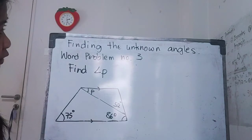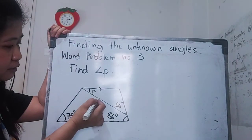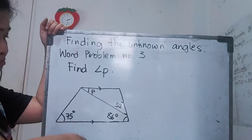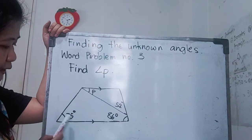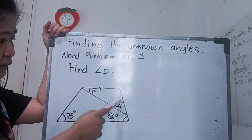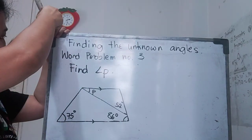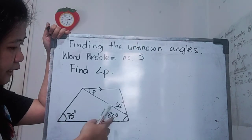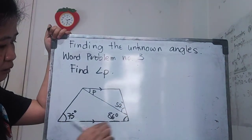For the last word problem, we need to find angle P. Looking at this figure, what kind of quadrilateral is this? This is a trapezium — it has one pair of parallel lines. This top line is parallel to the line at the bottom, and the other two lines are not parallel. We have three angles given: 86 degrees here, 52 degrees here, and 75 degrees on this angle. We need to find angle P.